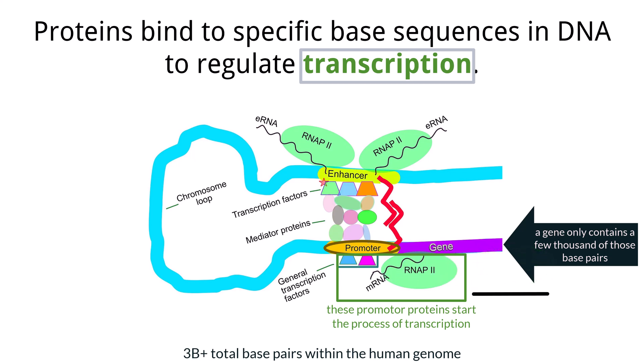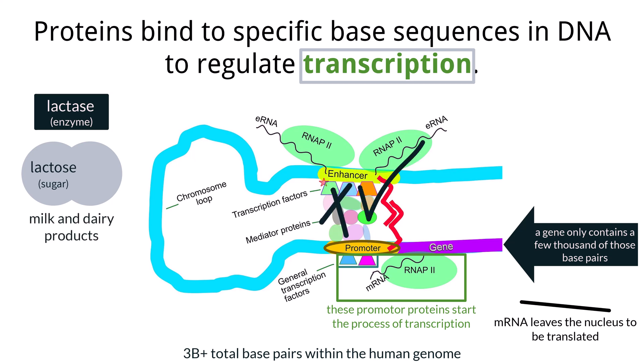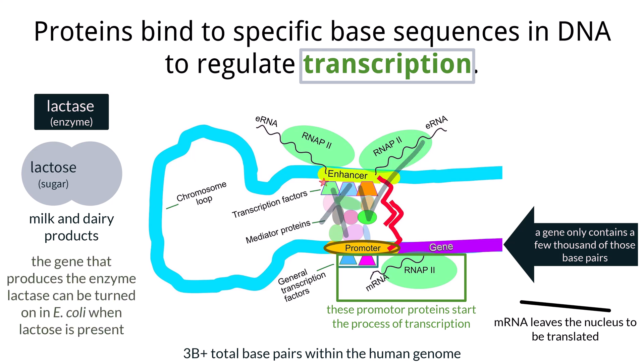The mRNA will leave the nucleus and be translated into a protein. It would be a waste of energy to make proteins when we don't need them. An example is the enzyme lactase, which is only needed when lactose is consumed. Lactose is found in milk and dairy products. The system has a way to turn off or turn on transcription depending on what is needed. There is an enhancer region upstream from the gene which allows certain activation proteins to attach, which will cause transcription.